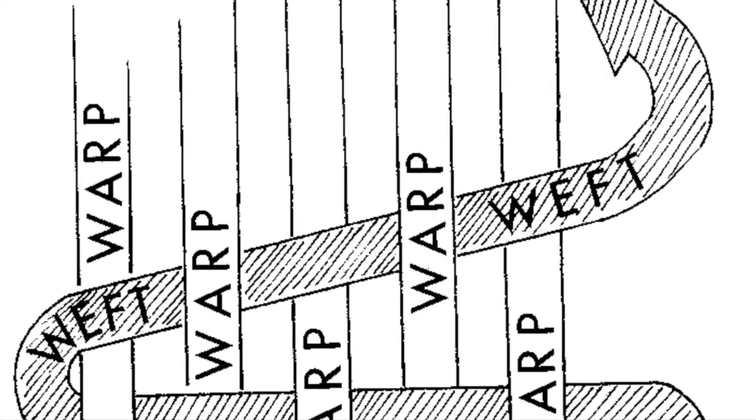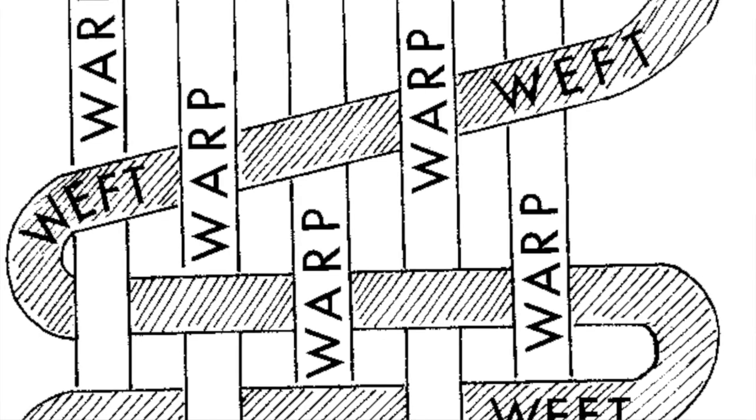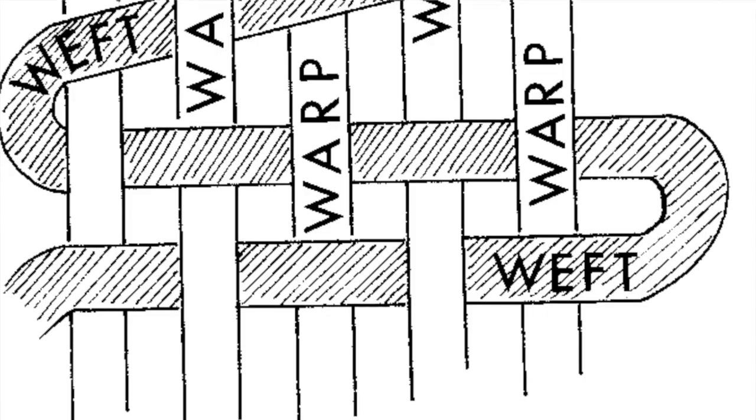A weaving is made up of two main parts, the warp and the weft. The warp stands vertically or up and down. The weft weaves through the warp horizontally or side to side.